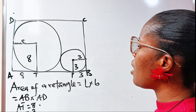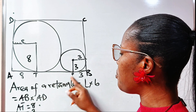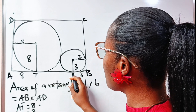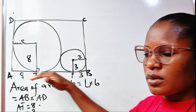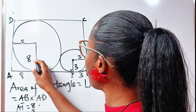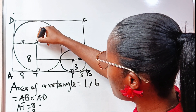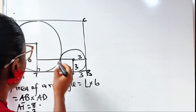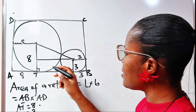We have found TA = 8 and PB = 3. The only remaining piece is TP. To find it, we draw a line parallel to AB and perpendicular to the sides of the rectangle, then join the two centers of the circles with a straight line.